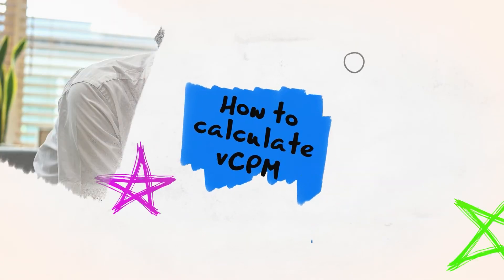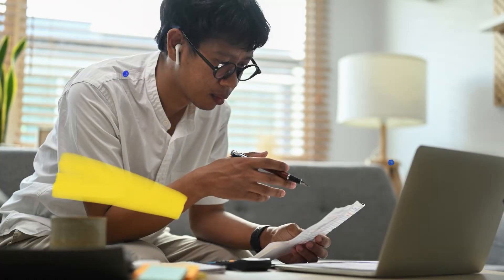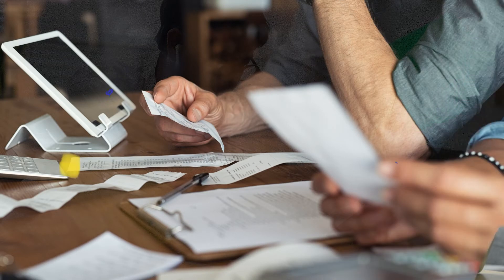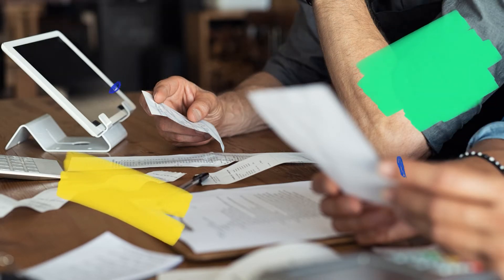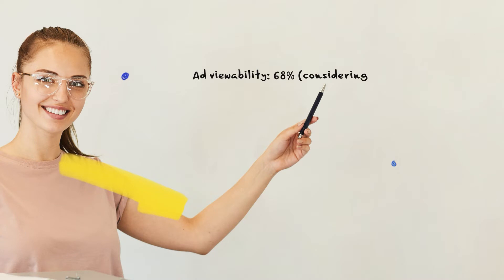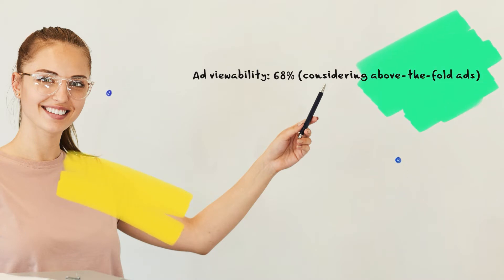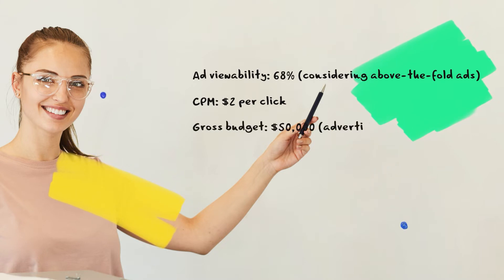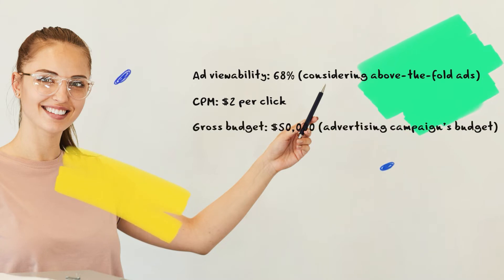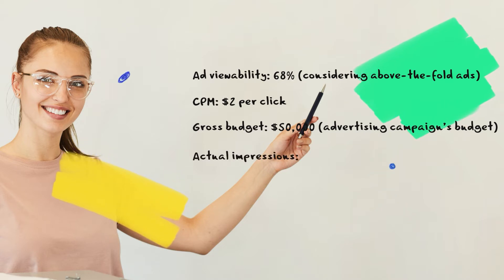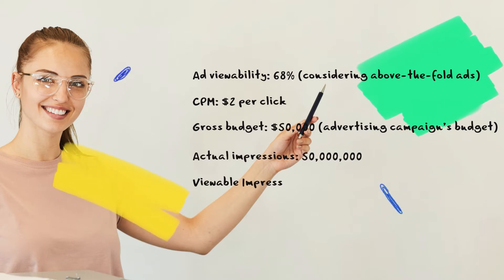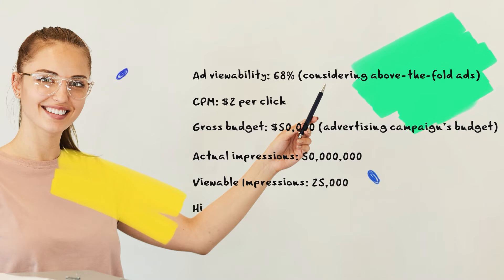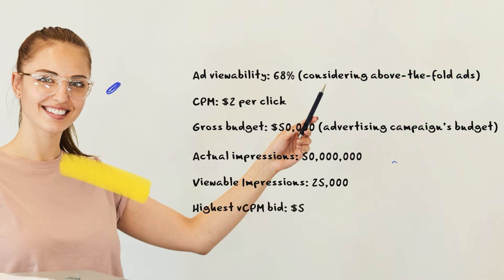The vCPM metric is mainly used to track ad campaigns that enable advertisers to measure the number of times an ad is viewed on a page. Calculating viewable CPMs is similar to the CPM calculation. Consider the following variables when crafting an ad campaign using a vCPM plan: ad viewability 68%, above-the-fold ads, CPM $2 per click, gross budget $50,000, actual impressions 50 million, viewable impressions 25,000, and highest vCPM bid $5.